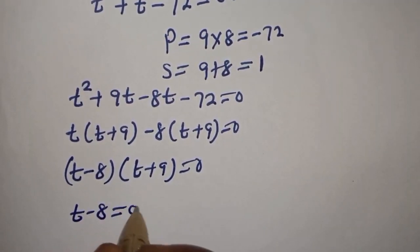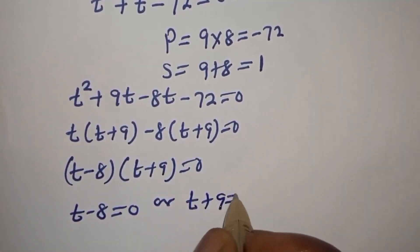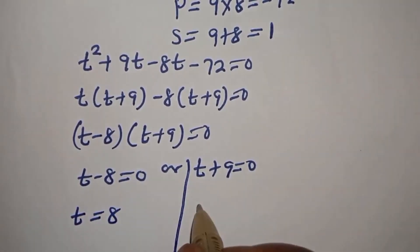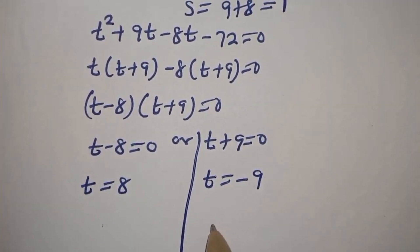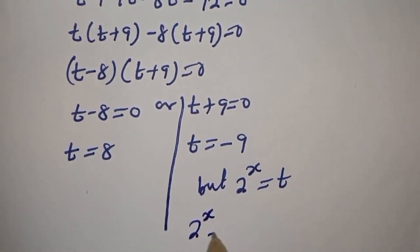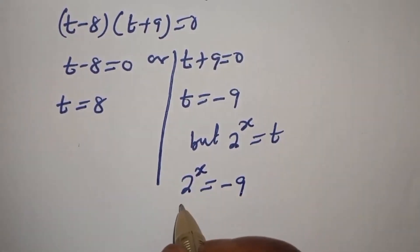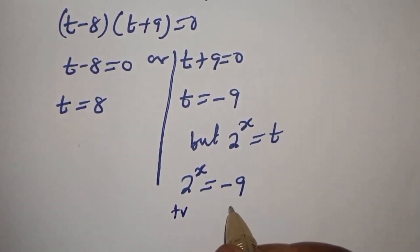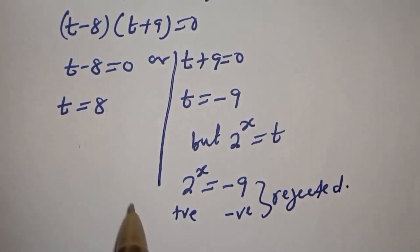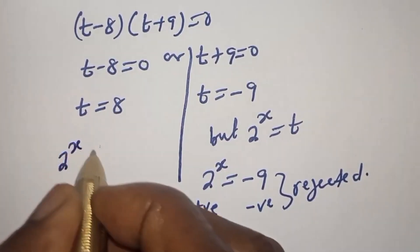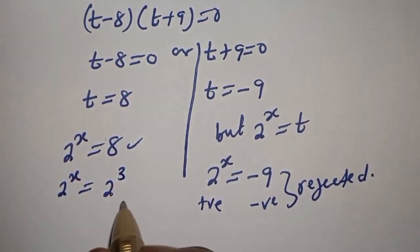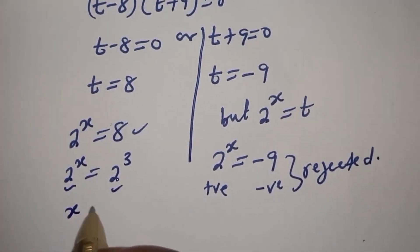t minus 8 equals 0, or t plus 9 equals 0. From the first case, t equals 8. From the second, t equals minus 9. But since 2 raised to power s equals t, we would have 2 raised to power s equals minus 9. Since 2 raised to any power is always positive, this negative value is rejected. From the valid case, 2 raised to power s equals 8, which is 2 raised to power 3. Since they have the same base, s is equal to 3.